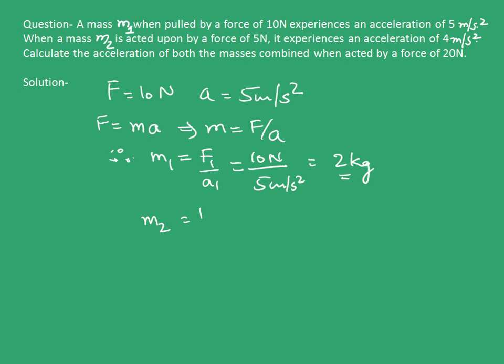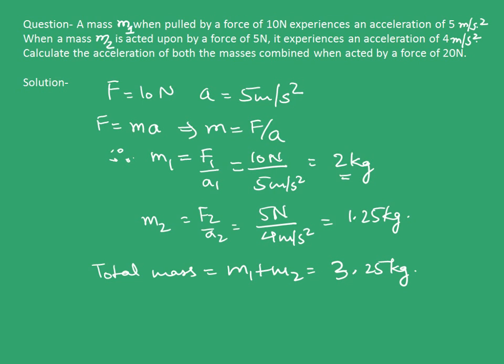Similarly, mass M2 is F2 upon A2, which equals 5N upon 4 m/s², which is 1.25 kg. Now, when both masses are combined, total mass is M1 plus M2, that is 3.25 kg. When a force of 20N acts on it, the acceleration is force upon mass, 20N upon 3.25 kg, which equals 6.15 m/s².